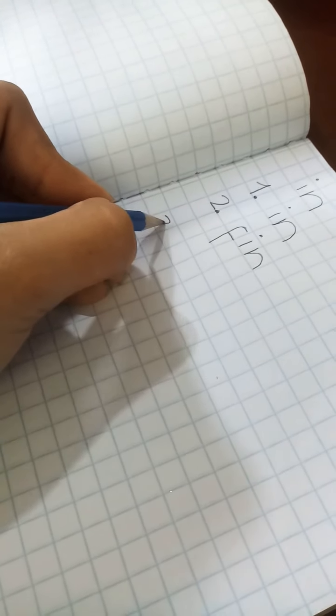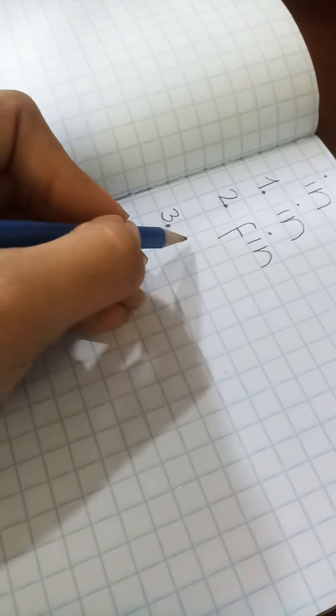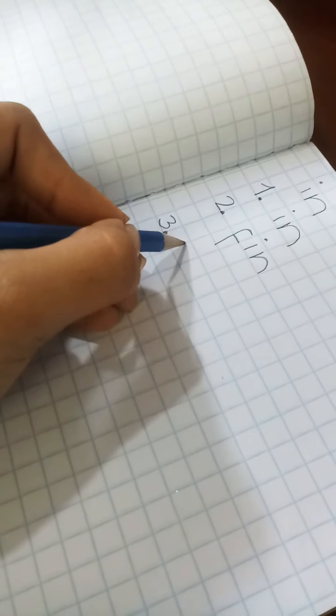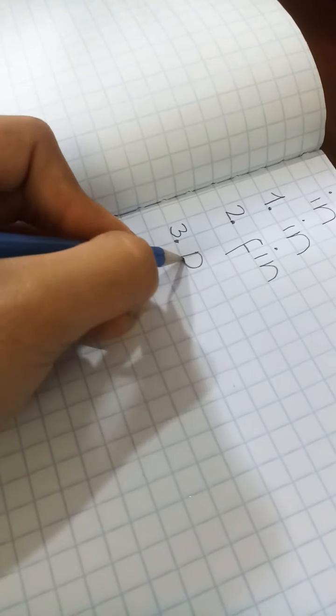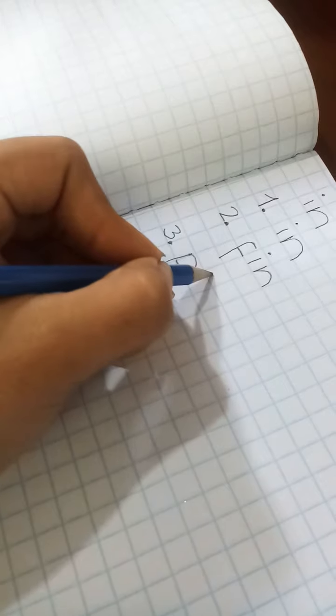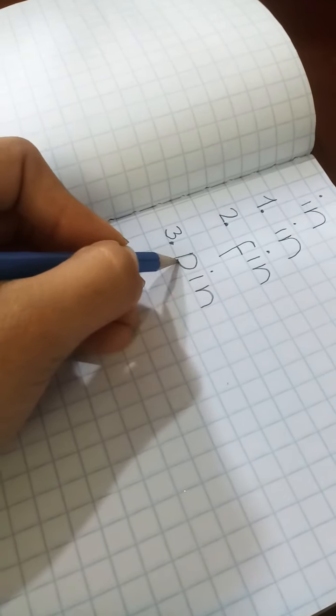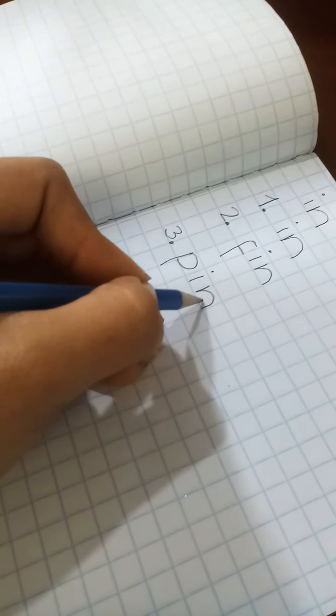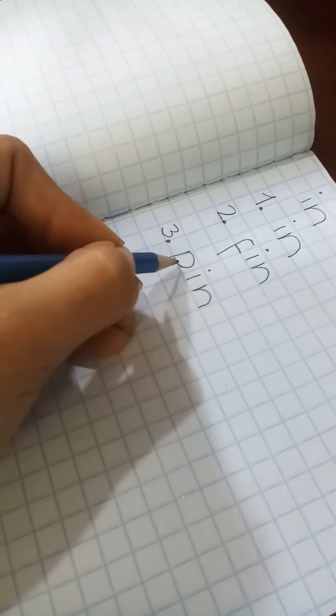Now leave one line and write number three. Number three, period. What is the letter? P-I-N... pin.